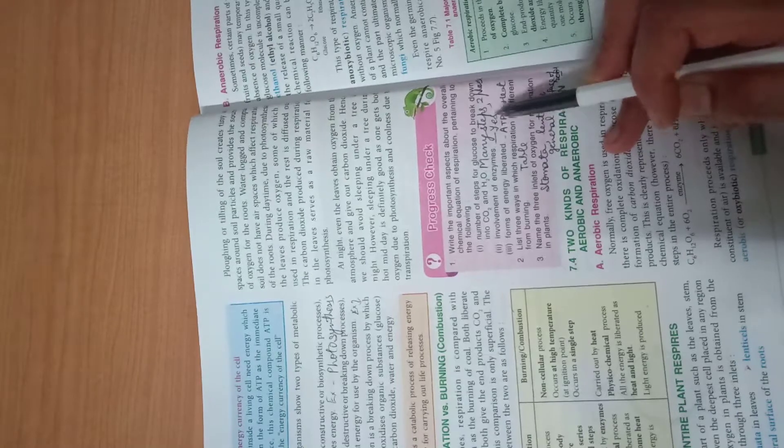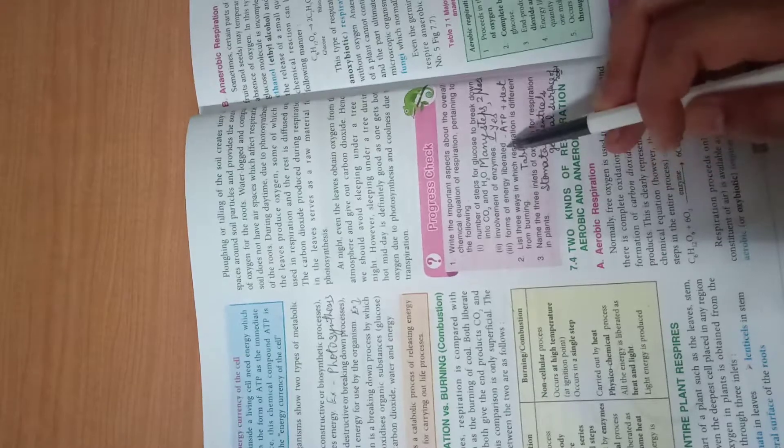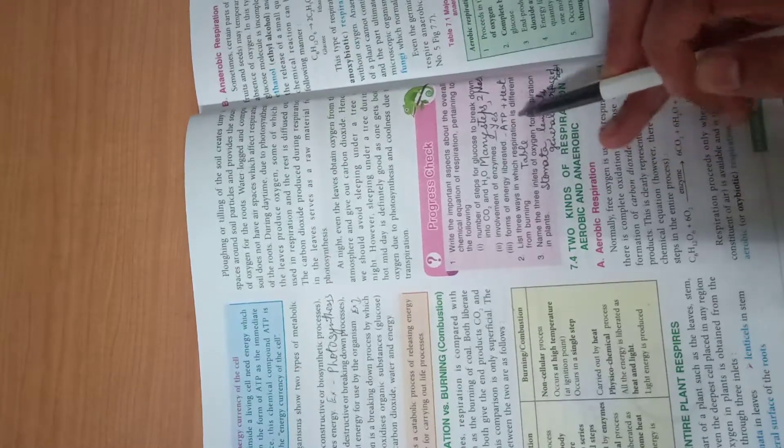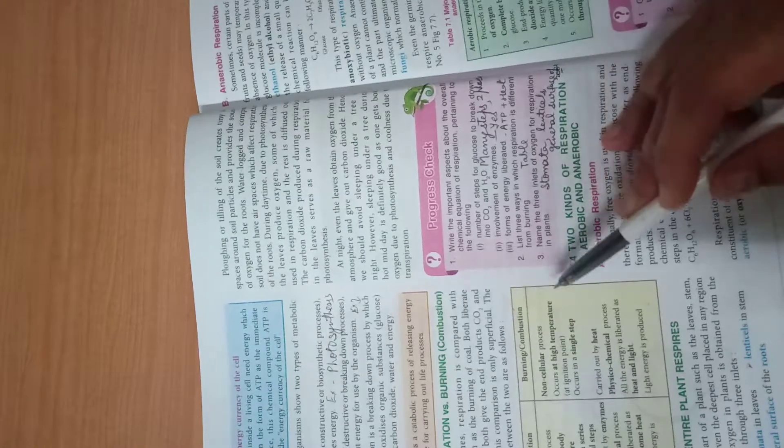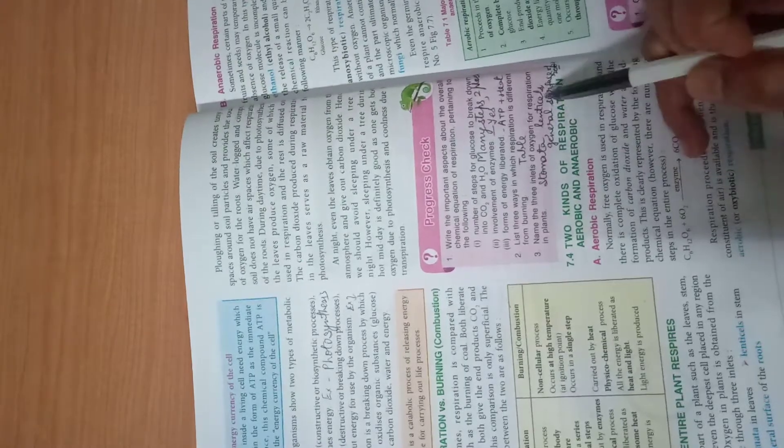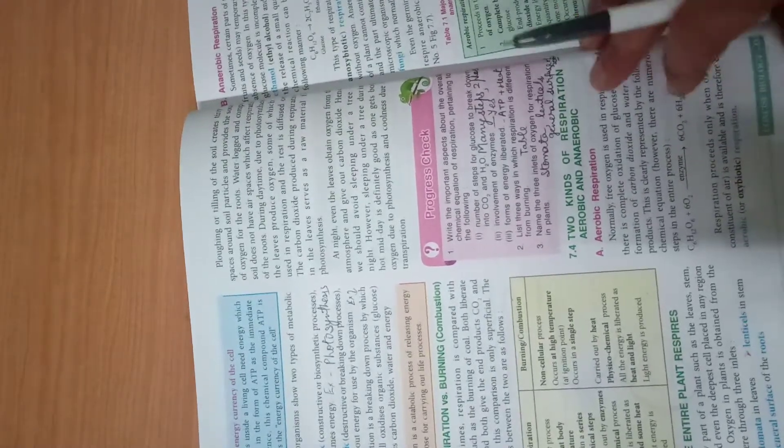Involvement of enzymes: yes, enzymes are involved. Each and every breakdown step is governed by a special enzyme. Forms of energy liberated are ATP and heat. Three ways in which respiration is different from burning—that we can see from this table. Now three inlets for oxygen for respiration in plants.